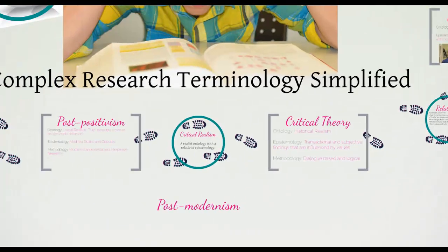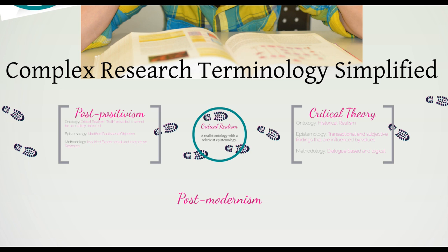Between positivism and constructivism, there are paradigms that combine varying degrees of both of these opposing perspectives. Postmodernism represents a range of viewpoints and is therefore impossible to define. Postmodernists believe that it is not possible to define social phenomena, meaning that attempting to define it would be contrary to postmodernism itself. Instead, it is a term that refers to a movement away from traditional schools of thought, founded on a distrust of large or abstract theories that explain reality. Essentially, postmodernists do not believe in a truth that can be defined.